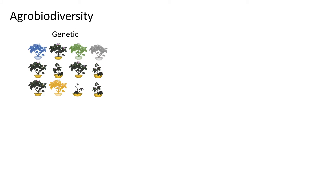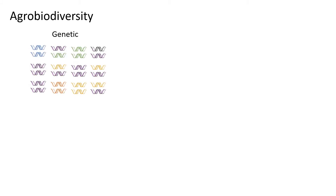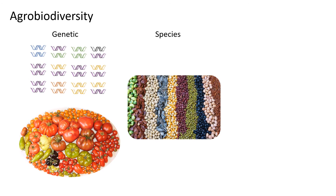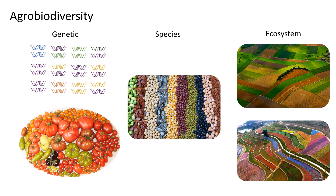Agrobiodiversity designates the biodiversity in agricultural systems. There are different levels of agrobiodiversity. Genetic diversity can be observed within a field, but also within a crop species. The next level of agrobiodiversity is the diversity of all crop species that are cultivated, whether in a specific field, at the level of a country, region or even the whole world. The highest level of agrobiodiversity is at the ecosystem or landscape level, which encompasses the different types of ecological communities and landscapes.